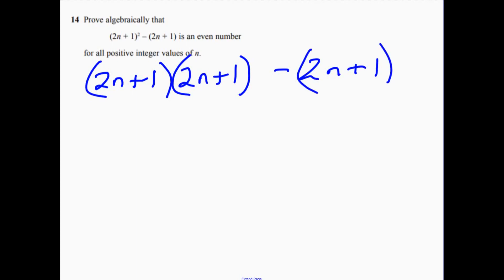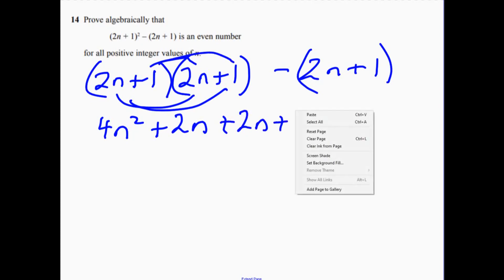If I multiply out this first one, so I've got 4n squared plus 2n plus 2n plus 1 plus 1 and then take away 2n. Now, be careful if I'm removing this bracket, that also becomes a takeaway.